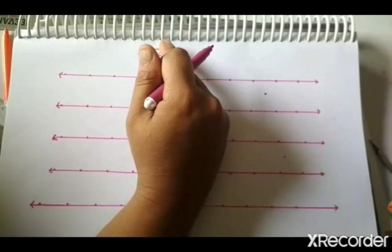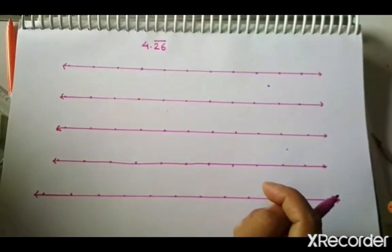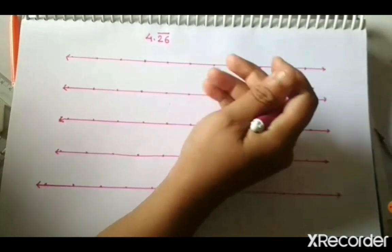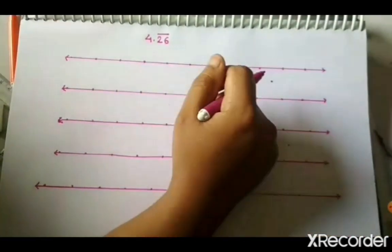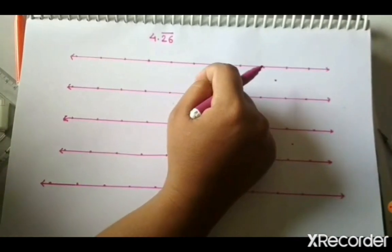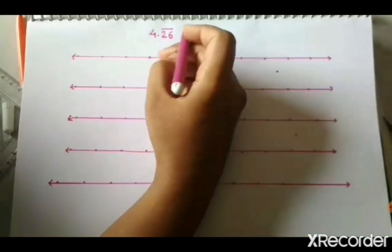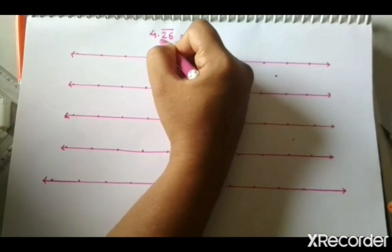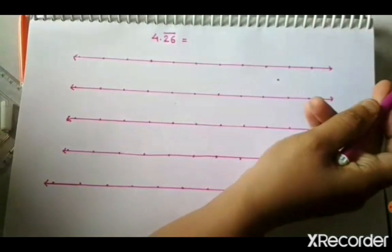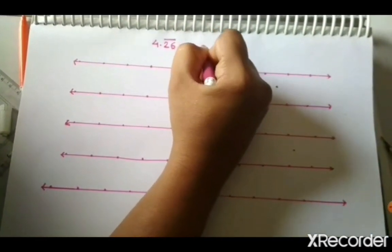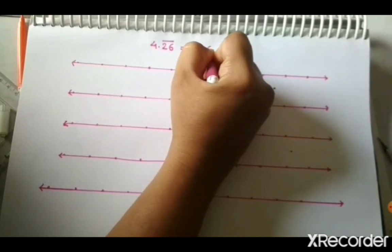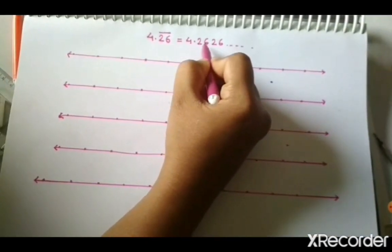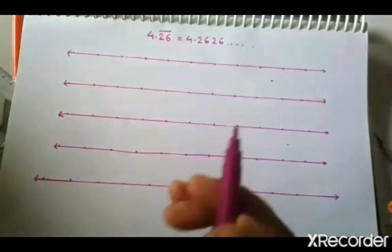How to represent a recurring number on a number line by using successive magnification? Till 4 decimal places, I will explain using 4 decimal places. So 4.26 bar means the digits 26 are repeating again and again. If I write it till 4 decimal places, this number becomes 4.2626. So I will represent 4.2626 on a number line.